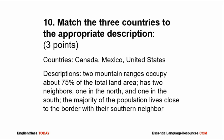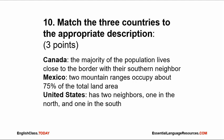Number 10. Match the three countries to the appropriate description for three points. The countries: Canada, Mexico, and the United States. The descriptions: two mountain ranges occupy about 75% of the total land area; has two neighbors, one in the north and one in the south; and the majority of the population lives close to the border with their southern neighbor. The answer: in Canada, the majority of the population lives close to the border with their southern neighbor. In Mexico, two mountain ranges occupy about 75% of the total land area. The United States has two neighbors, one in the north and one in the south.